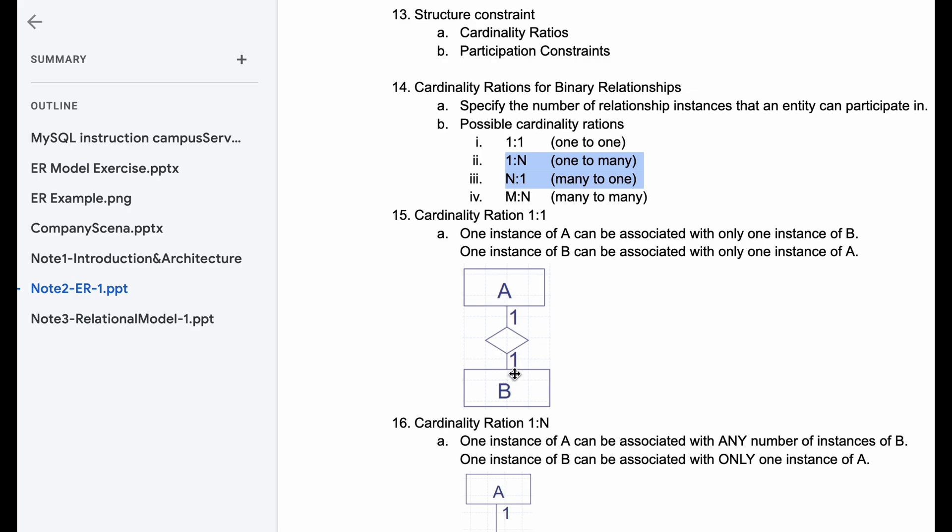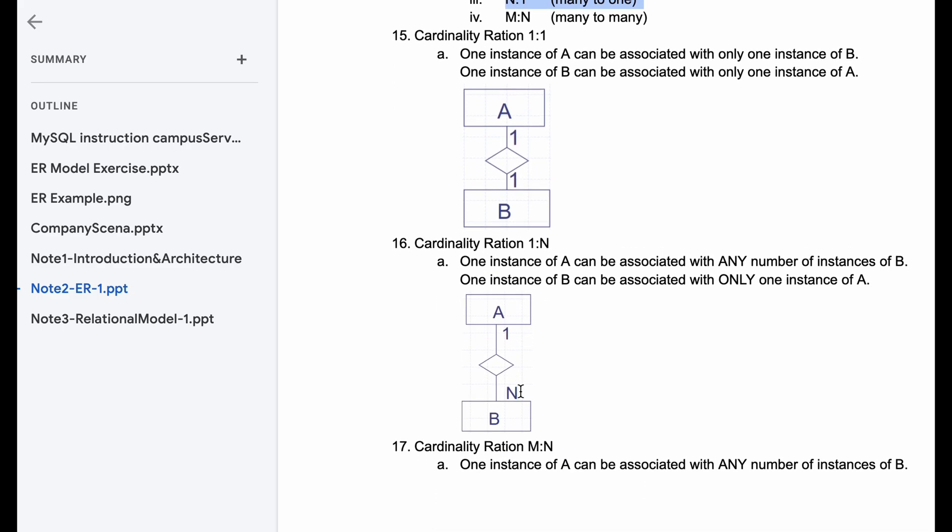A is the employee, and B is the employer. And the relationship is that A works for B. So that is our cardinality ratio one-to-one.